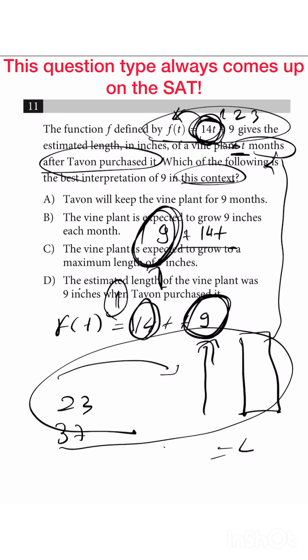So the answer is D, the estimated length of the vine plant was nine inches when Tavon purchased it. So yep, I hope you could understand. Keep doing well. Keep studying. You got this. Goodbye.